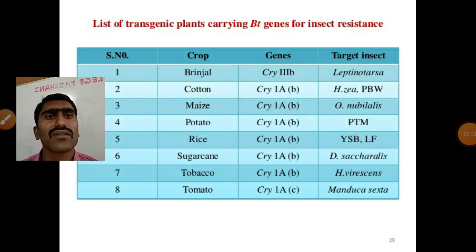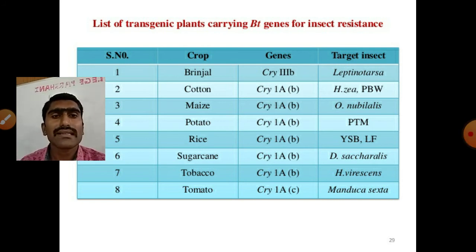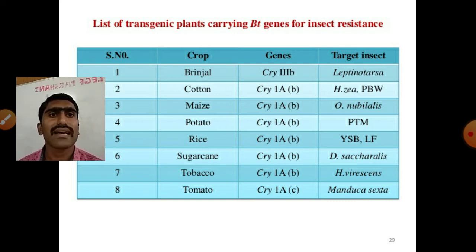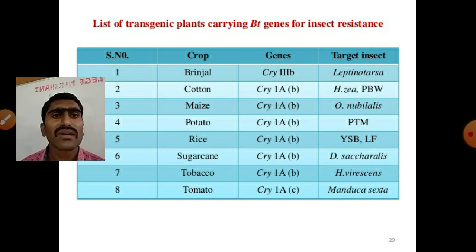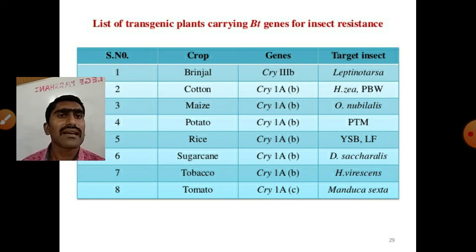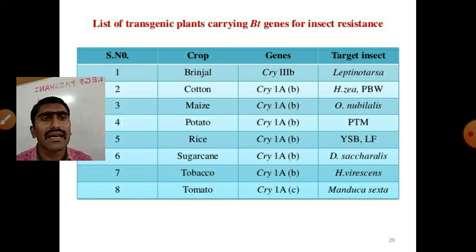Here is a list of some transgenic plants which carry Bt genes for insect resistance. The list includes brinjal, cotton, maize, potato, rice, sugarcane, tobacco, and tomato. The genes they possess are: in brinjal cry3B, in cotton cry1Ab, in maize cry1Ab, in potato cry1Ab, in rice cry1Ab, in sugarcane cry1A, in tobacco cry1A, and in tomato cry1A. Their target insects are also listed accordingly, such as Leptinotarsa in brinjal.